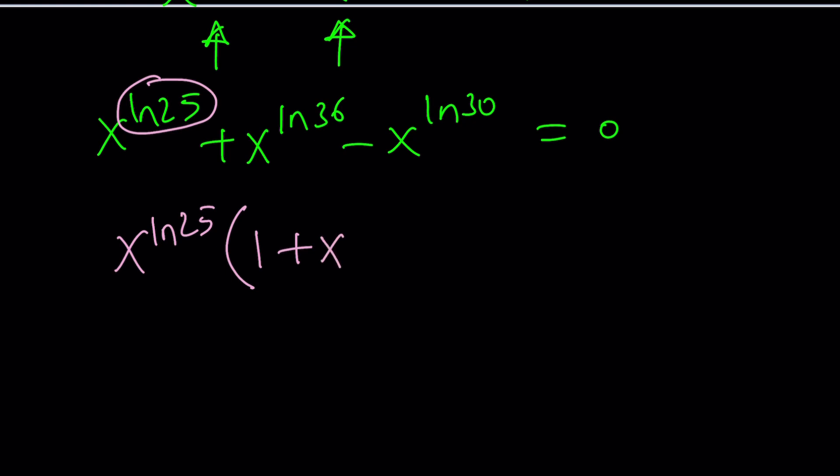Let's take it out. We're going to get x to the power ln 25 times 1 plus x to the power ln 36 minus ln 25 minus x to the power ln 30 minus ln 25. One thing that's good about it is that our powers are positive. When you set it equal to 0, we end up with x equals 0. But what about the other solutions? Are there any other solutions? How many solutions are there?